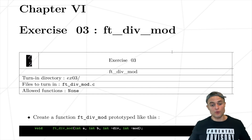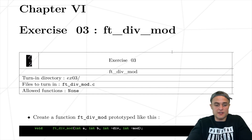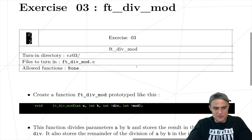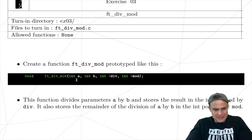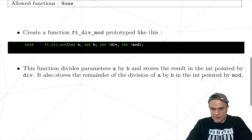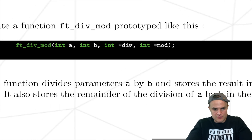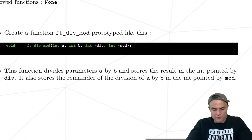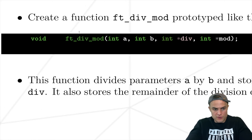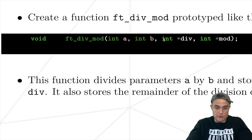Today we're going to solve another exercise which is not very difficult but nonetheless has to be done. We have to create a function that divides parameter a by b and stores the result in the int pointed by div. It also stores the remainder of the division of a by b in the int pointed by mod. So we have this function that doesn't return any value — it takes two integers and stores the division and the modulo operation.